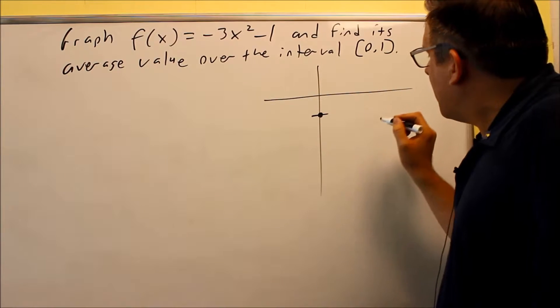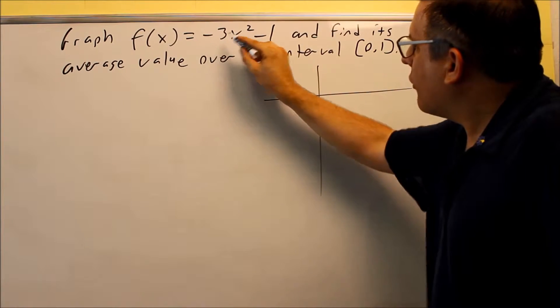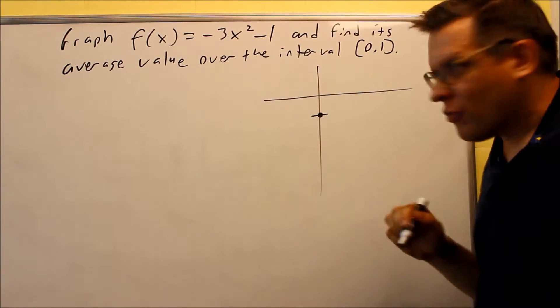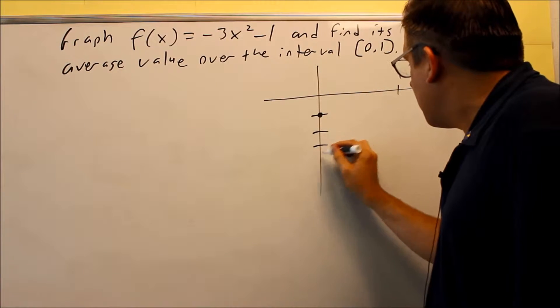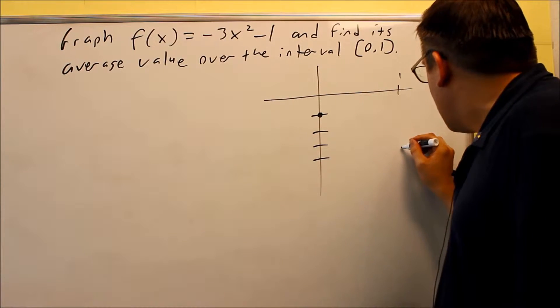Then I want to test a 1. If I put 1 in here, I get negative 3 minus 1. That gives me negative 4. So I'll put 1 over here, and I get negative 4.